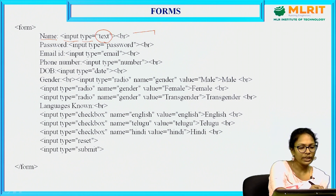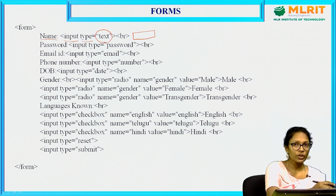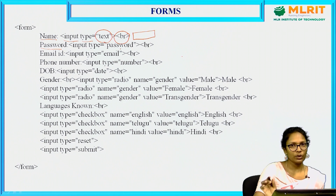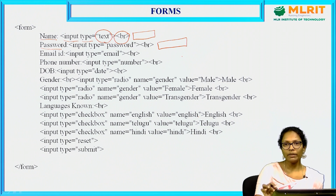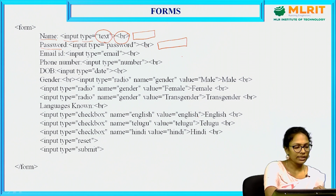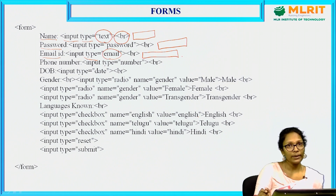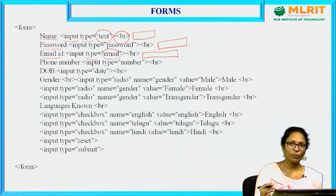After the name field, we come to the next line using a break tag. Next, password — to take the password from the user, we use input type equal to password. It creates a text field, but whatever you type will not be visible — it will be displayed as stars or dots. Then we print 'Email ID' and use input type as email, which creates a text field that expects a valid email ID with the '@' symbol and follows proper email rules.